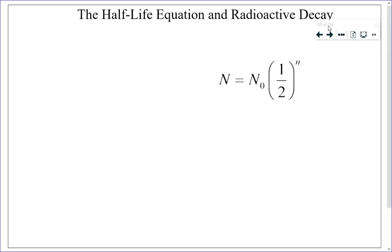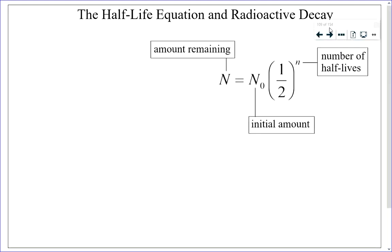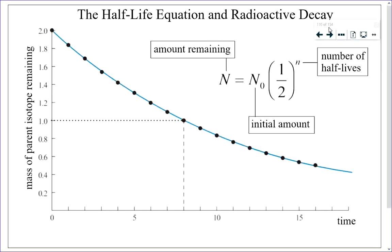The half-life equation is given on your formula sheet — make sure you know what all the variables are. If you need to determine the half-life or how many half-lives elapse, you can go to a graph. The half-life is literally the period of time it takes for the isotope to decay to one-half of its original amount.